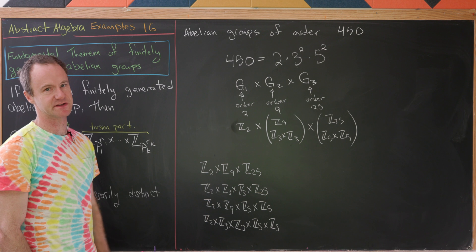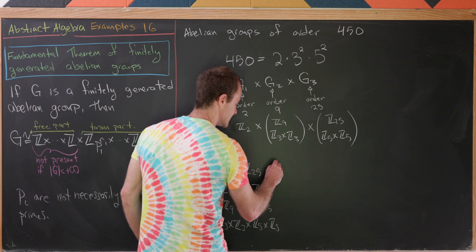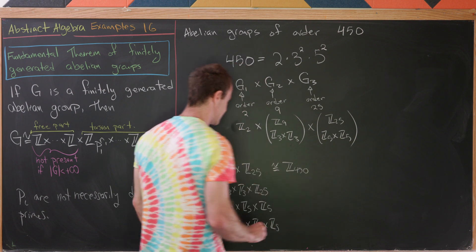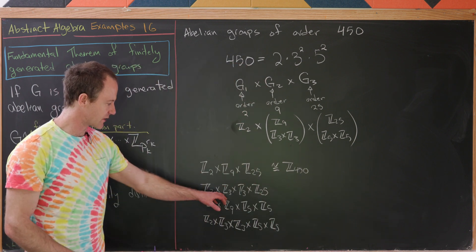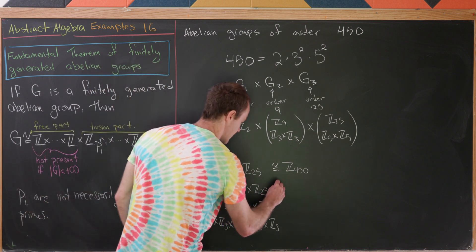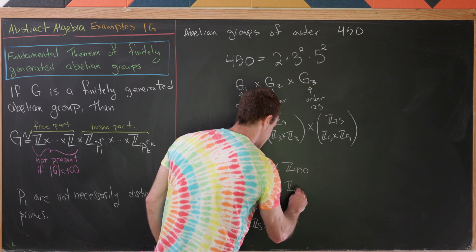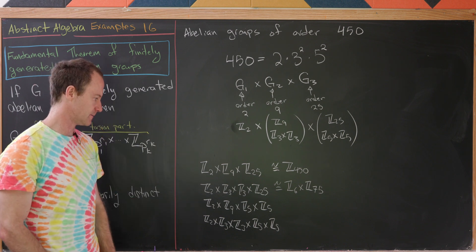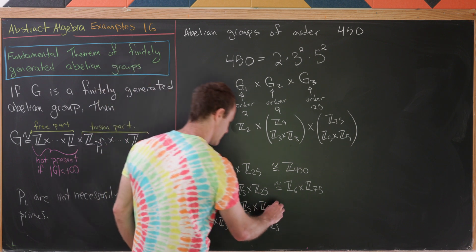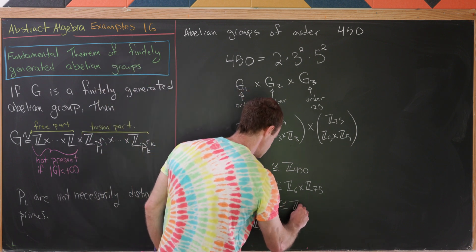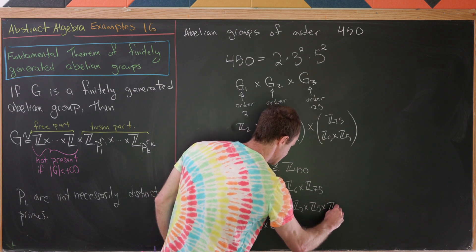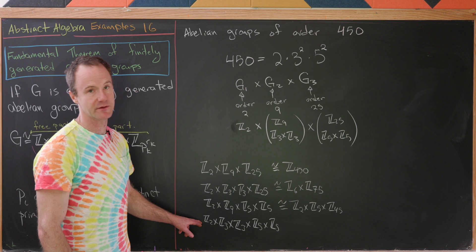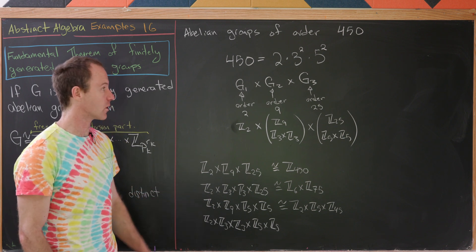And of course, we could apply an isomorphism theorem to smash these together if we wanted to. Since 2, 9, and 25 are relatively prime, we can push all of these together into the cyclic group Z450. Then since 2 and 3 are relatively prime and 3 and 25 are relatively prime, we can push this into Z6 cross Z75. We could also push it into some other things as well. Then we could do something here as well. Maybe the best thing to do here would be to write this as Z2 cross Z5 cross Z45. So all in all, there are four total groups.